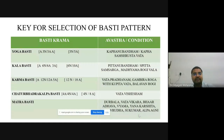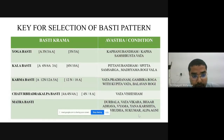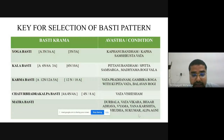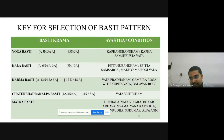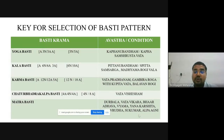Regarding the key for selection of Vasti pattern: Yoga Vasti contains 3 Niruha Vasti and 5 Anuvasana Vasti and is always indicated in Kapha Anuvandi or Kapha Samsrishtha Vata condition. Kala Vasti has 6 Niruha Vasti and 10 Anuvasana Vasti (16 total per Chakrapani); it is indicated in Pitta Anuvandi or Pitta Samsargaja condition in Madhyama Rogibala. Karma Vasti has 30 total — 12 Niruha Vasti and 18 Anuvasana Vasti — and is used in Vata Pradhana Roga, Gambhira Roga with Kupita Vata, in Balavana Rogi.